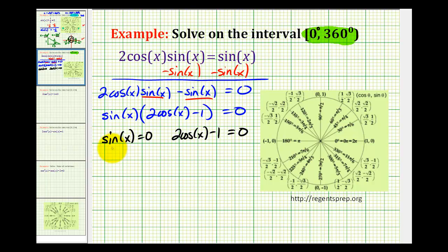So if we can determine the angles on this interval where the sine function value is equal to zero, we would have a solution. And if we solve this equation for cosine x, we'd have cos(x) = 1/2. So now if we can determine angles where the cosine function is equal to one-half, we also have solutions.